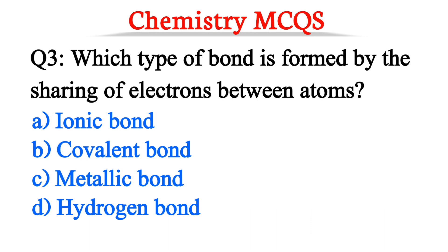Question number 3. Which type of bond is formed by the sharing of electrons between atoms? The correct option is option B, Covalent Bond.